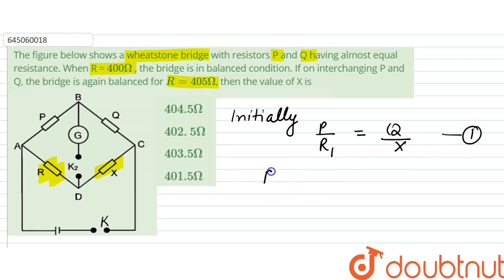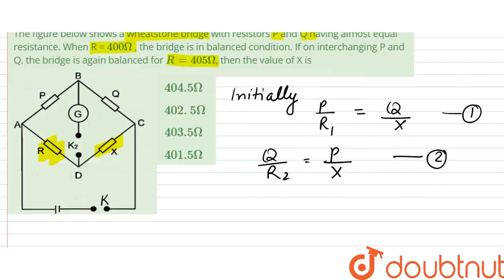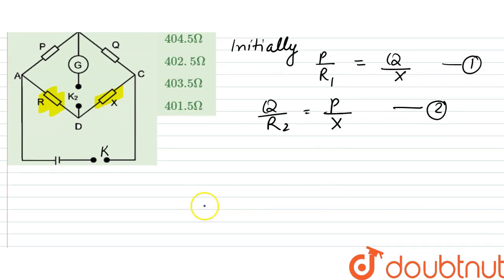Now later on, we are shifting P and Q. So what we can write is Q by R2 would be equal to P by X. From here we could write P by Q to be equal to R1 by X, and from here we could write P by Q to be equal to X by R2.